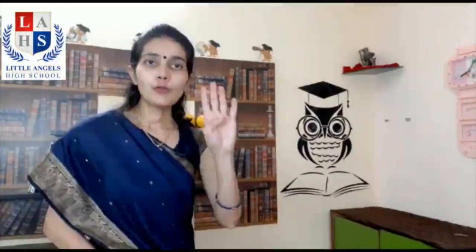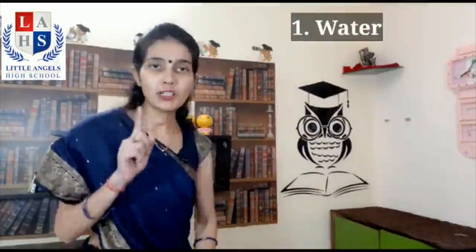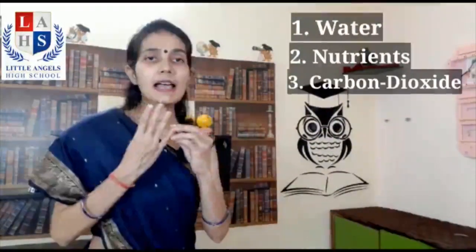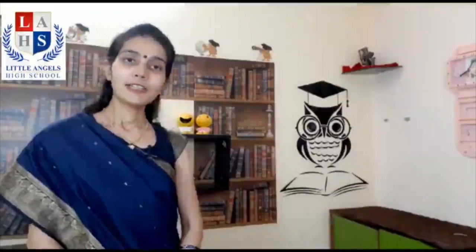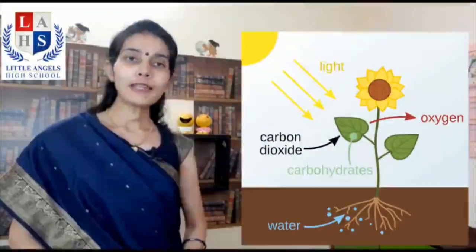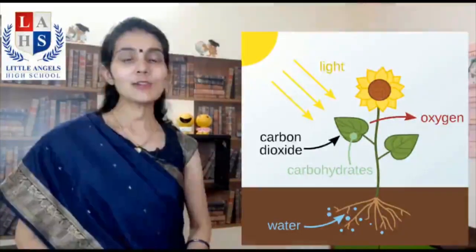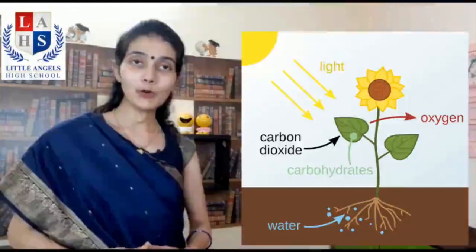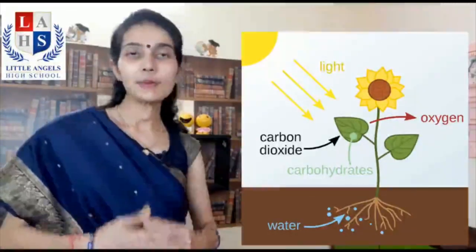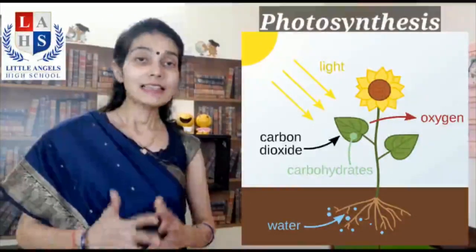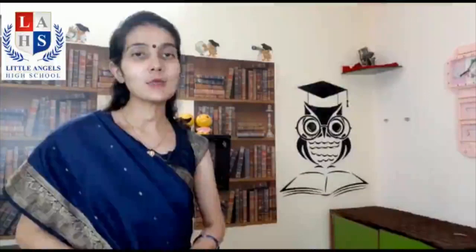Leaves are green because they contain a green substance or pigment called chlorophyll. This green pigment helps the plants to prepare food. But how? They require four things: water, nutrients, carbon dioxide, and sunlight. Now this process of making food by green leaves of the plants in the presence of sunlight, with the help of water, carbon dioxide, and nutrients, is known as photosynthesis.